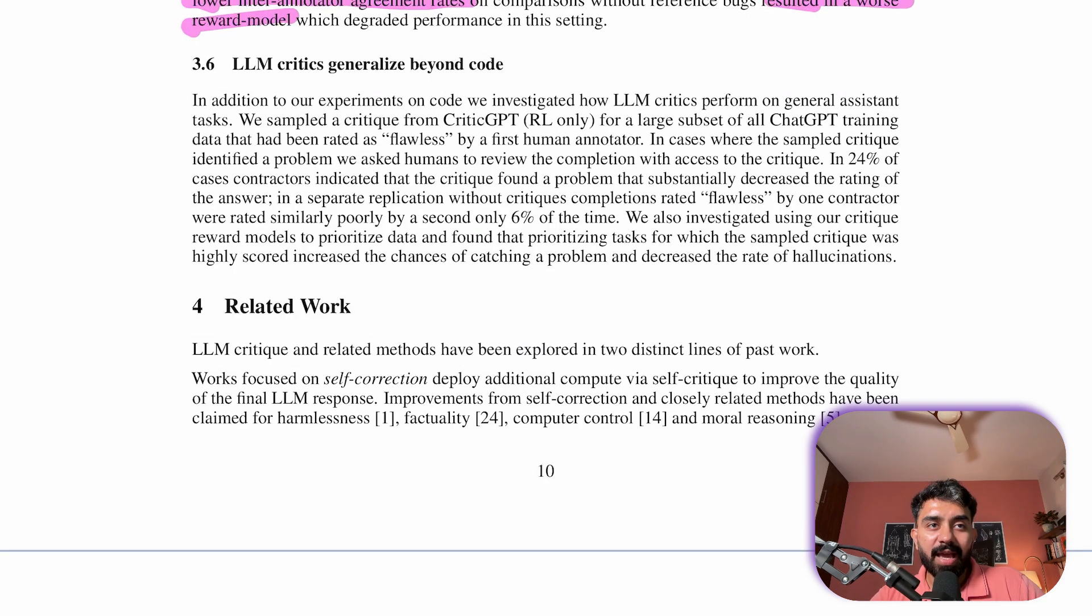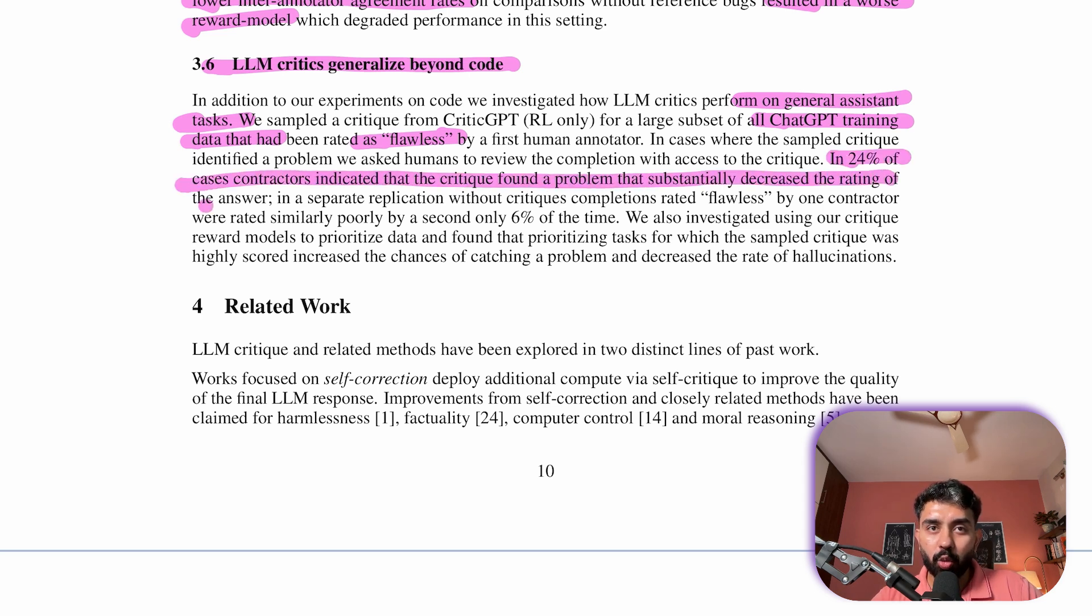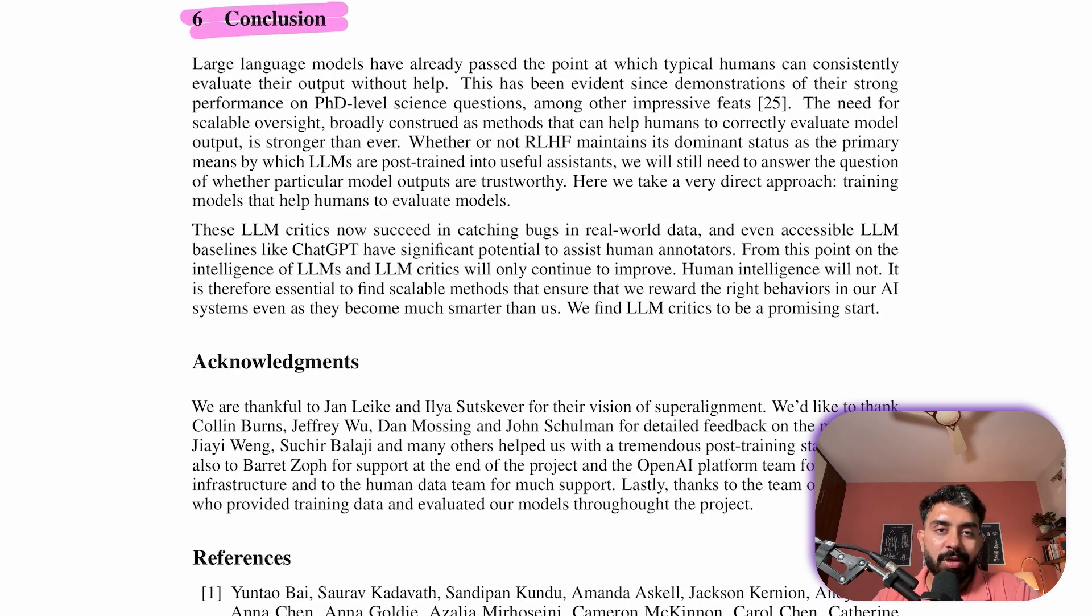Models without tamper data underperformed, likely due to lower agreement rates and a less effective reward model as well. LLM critics generalize beyond code, and yes they can. CriticGPT was tested on general assistant tasks from ChatGPT training data marked as flawless. In 24 percent of cases, CriticGPT identified problems that lowered the rating significantly compared to only 6 percent without critiques. Using critique reward models to prioritize tasks also improved problem detection and reduced the hallucinations.